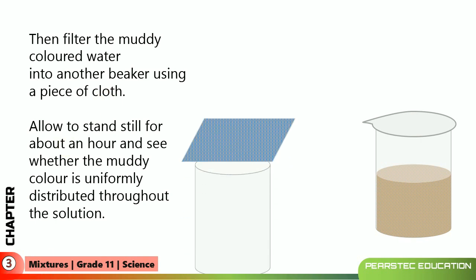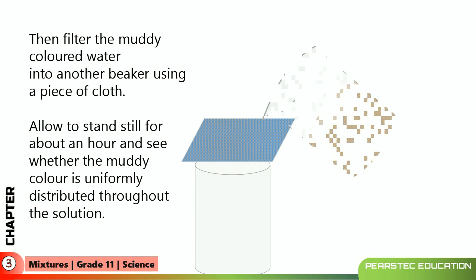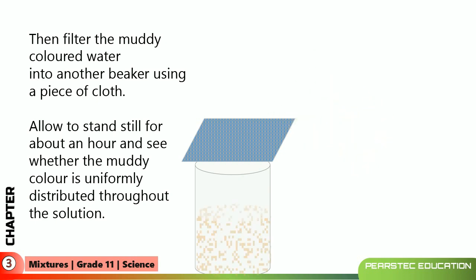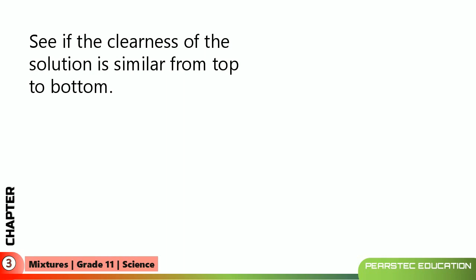Take the second beaker, place the piece of cloth on top of it, and filter the solution. Then allow it to stand still for about an hour. After filtration, keep it for one hour and see whether the muddy color is uniformly distributed throughout the solution. Check whether the clearness of the solution is similar from top to bottom.